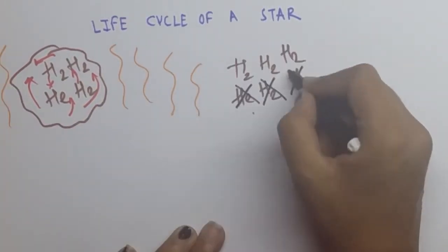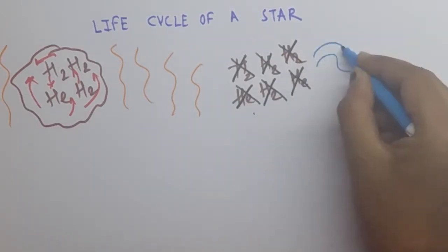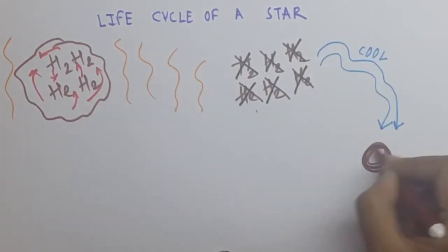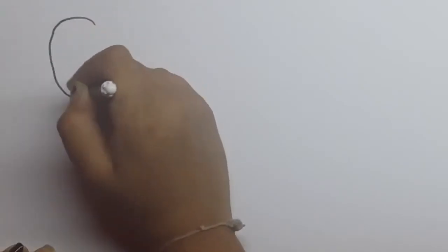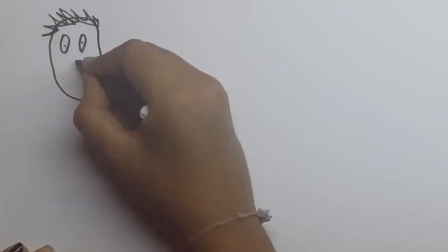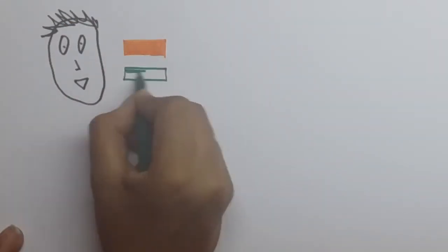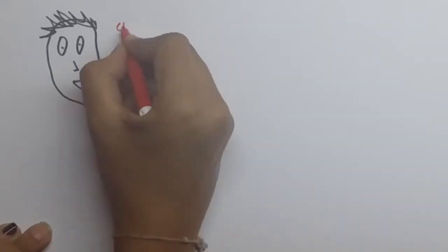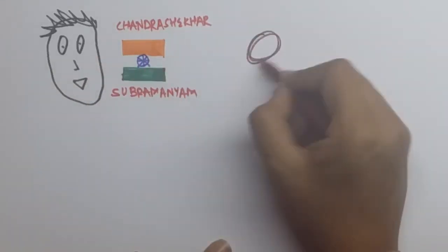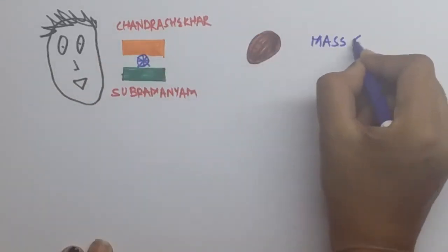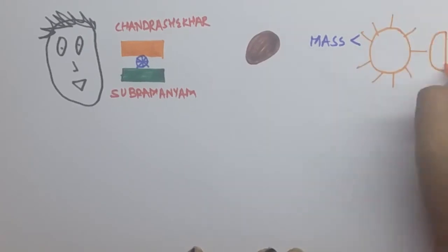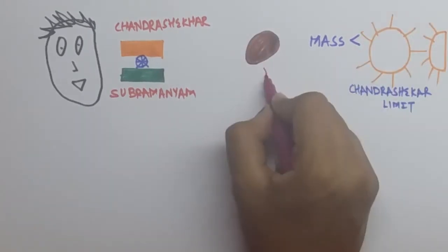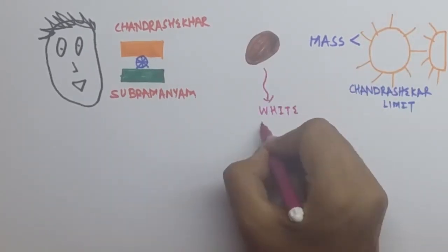An Indian graduate student by the name of Subramanyam Chandrasekhar came up with a very interesting hypothesis. If the mass of the star would be less than one and a half times the mass of our sun, popularly known as the Chandrasekhar limit, then the star would become a white dwarf.